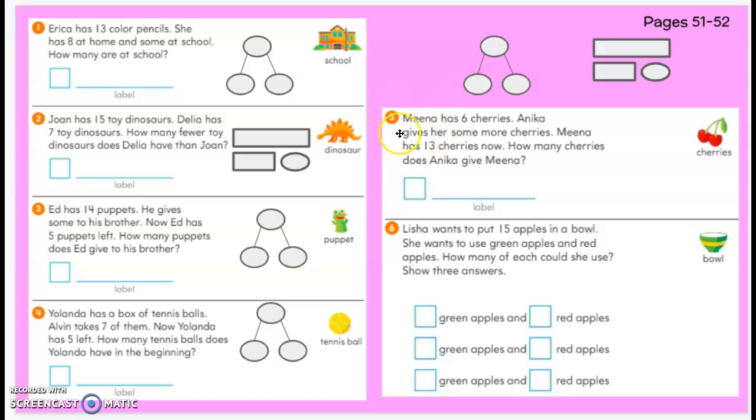So number five, and if you need to look back at yesterday's video, go back to yesterday's roadmap and find the mini lesson video. Mina has six cherries. Annika gives her some more cherries. Mina has 13 cherries now. How many cherries does Annika give Mina?